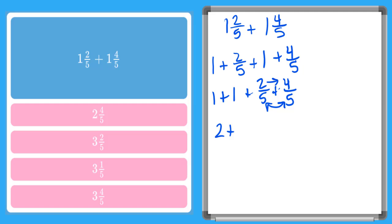And then I'm going to go ahead and add my numerators, 2 plus 4 over 5. So that's going to give me 2 plus 6 over 5.